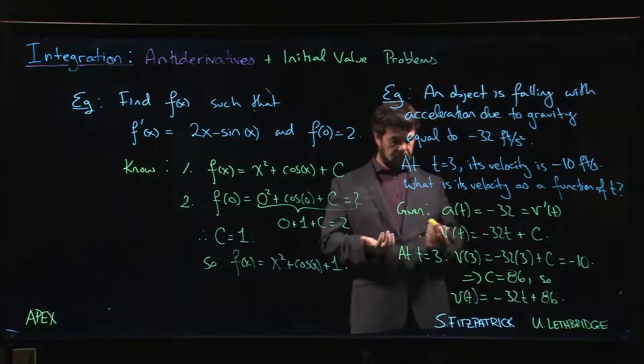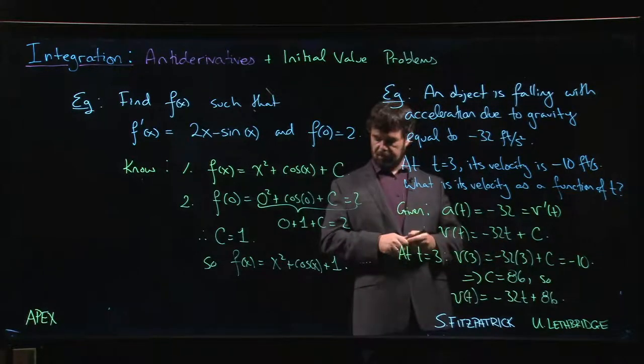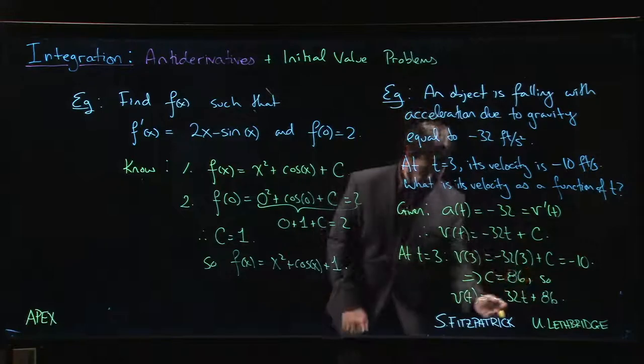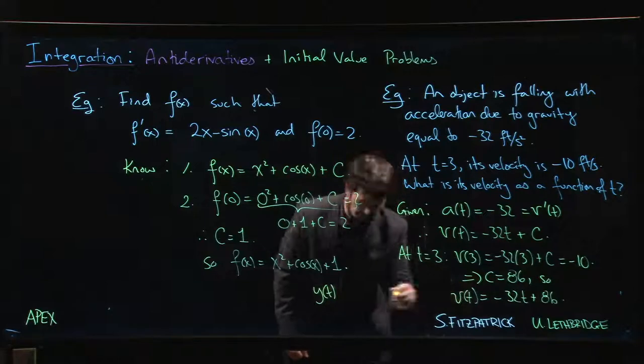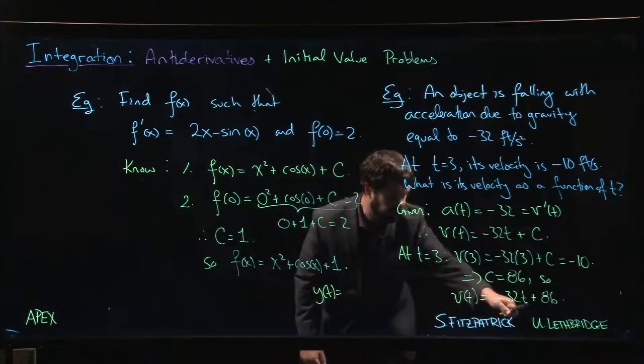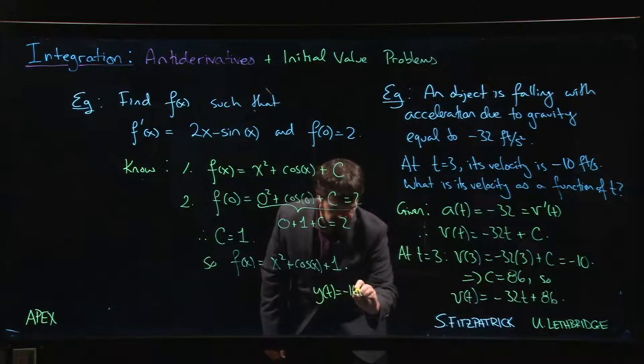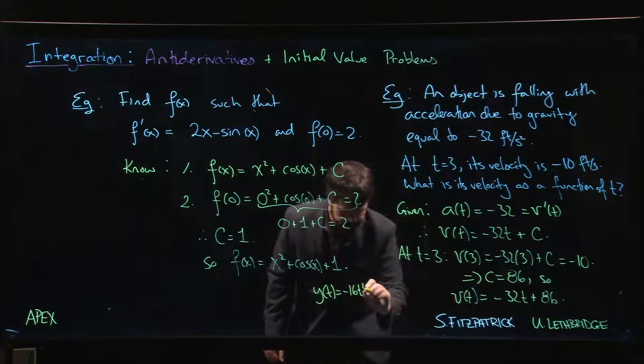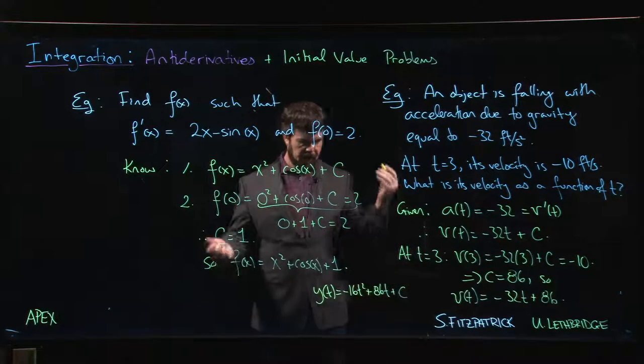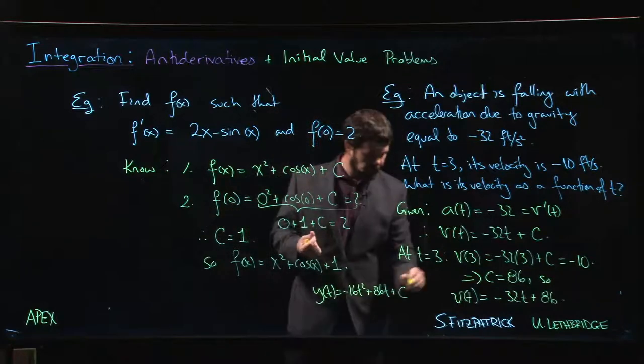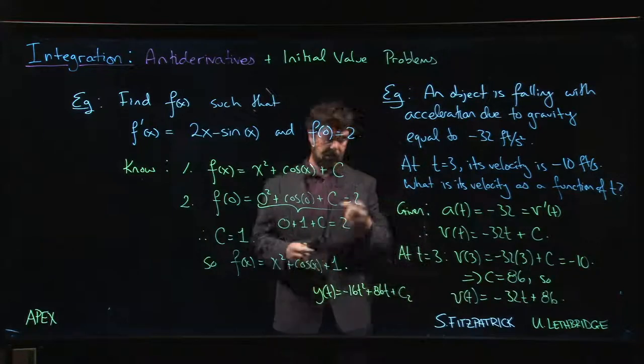Yeah, of course we can. We can go one step further. We'd say y of t, let's call it y, think of y as our height. It's going to be, antiderivative here, t squared over 2, so 2 over 2 gives me minus 16t squared plus 86t, again plus some constant. Maybe we call this C2, it's a new constant.